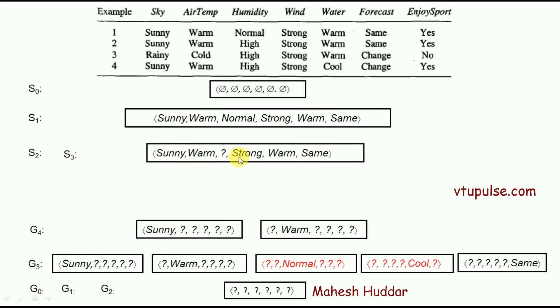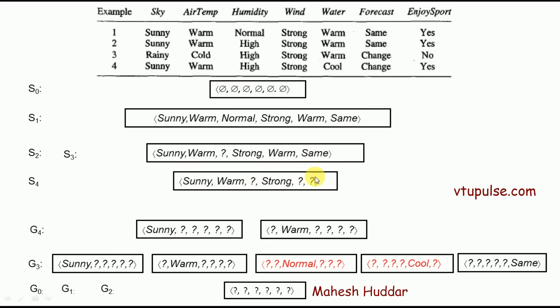We now go to the specific boundary to check consistency with example 4. Sunny matches sunny, warm matches warm, question mark matches high, strong matches strong, but cool does not match warm and same does not match change. So we replace cool and same with question marks, giving S4 as sunny, warm, question mark, strong, question mark, question mark.